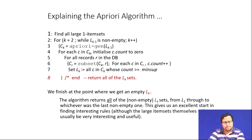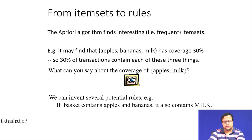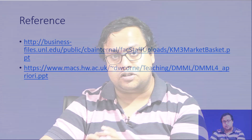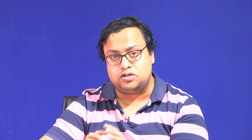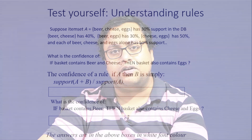There is also an example provided — you can check it and find out what kind of rules emerge. For example, what can you say about the coverage of apples and meals? If a basket contains apples and bananas, it also contains milk — support of A, B is 40 percent, and you can find the confidence of this rule. You can read more details from the provided links. In the next video, we will do a hands-on demonstration of how to implement this in R. Thank you very much.